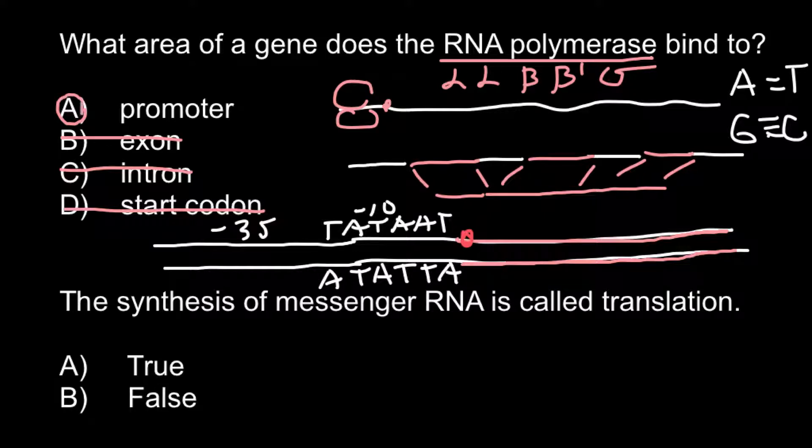And next question: The synthesis of messenger RNA is called translation. Is it true or false? Imagine that this is double-stranded DNA and this is the transcription bubble. And here we see messenger RNA synthesis. And we call this transcription.